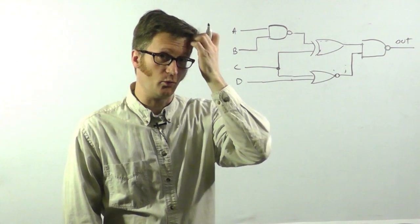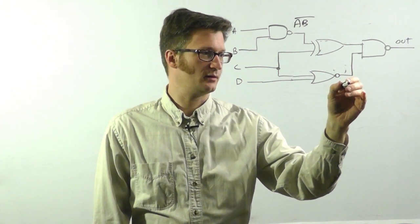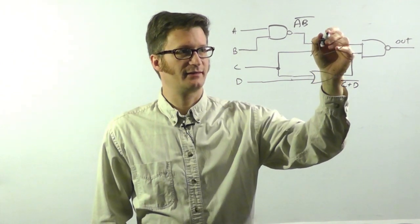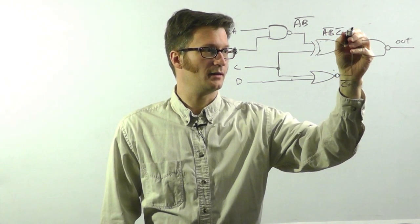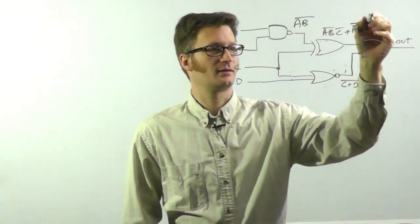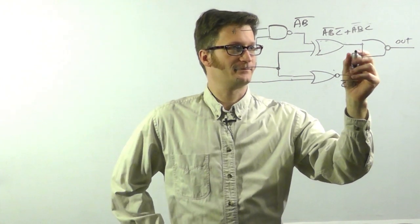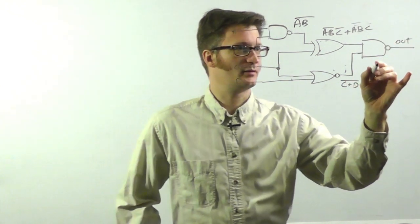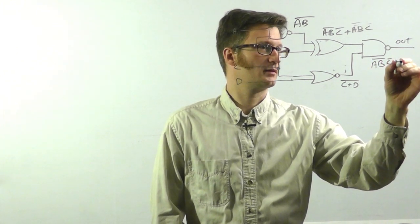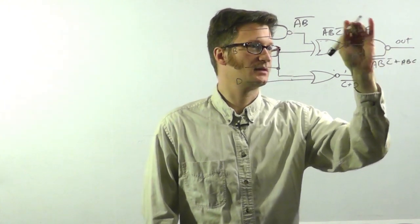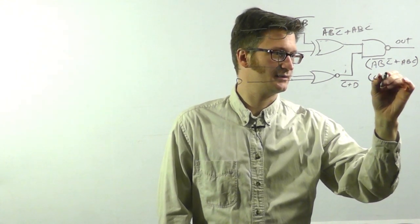And so we can calculate at each point what it does. So here is AB bar. And at this point we have C or D bar. And at this point we have AB bar C bar or AB bar bar C, which this just becomes ABC. And then we need to and it again.